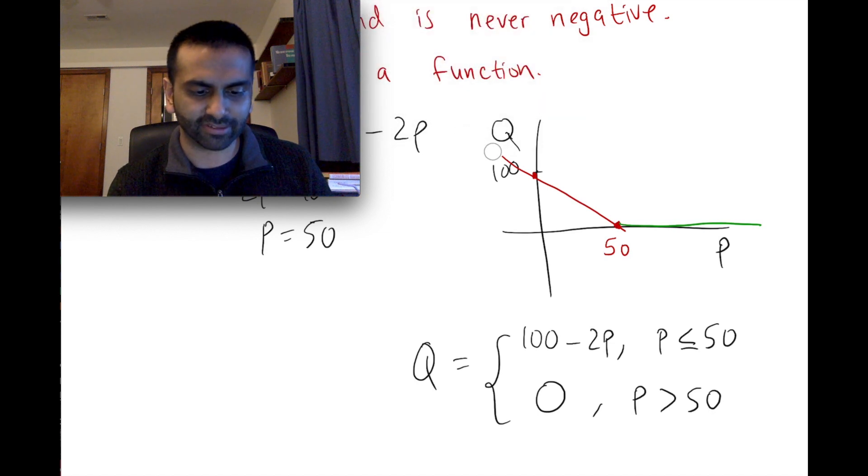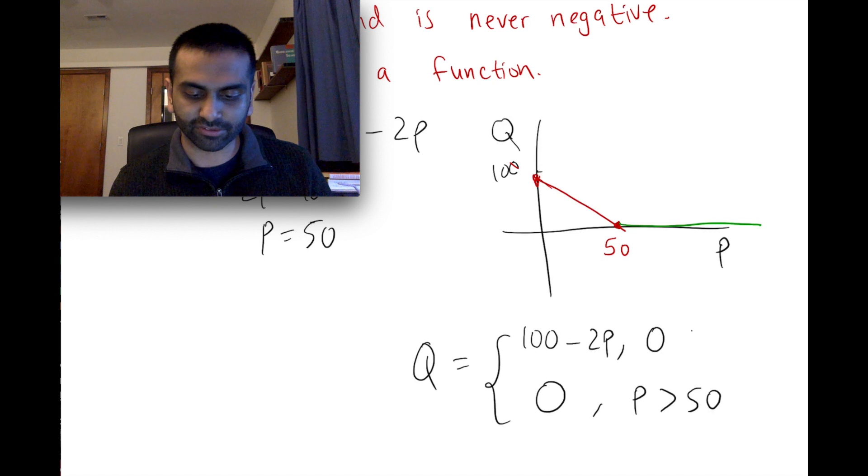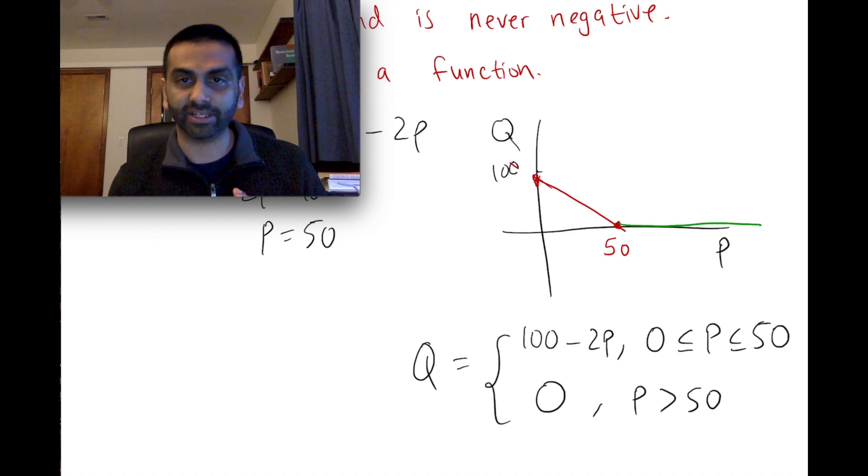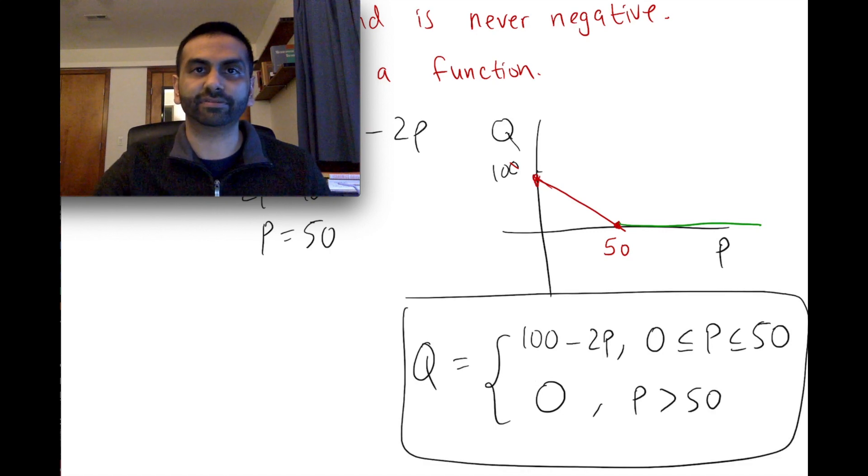And say for negative prices, we just don't even want this to be defined. So in that case, we just want it to start at prices of 0. So in that case, we could amend this domain. Instead of saying p is less than 50, we could say p is starting at 0 to 50. So for p-values, for prices of 0 to 50, this is the quantity demanded, and 50 onwards, the quantity demanded is 0. So this is the more full version of demand.